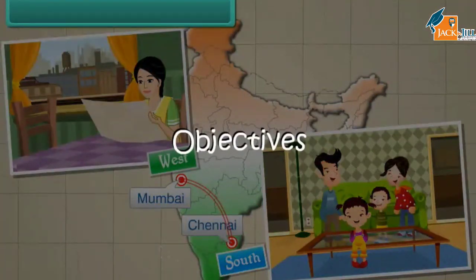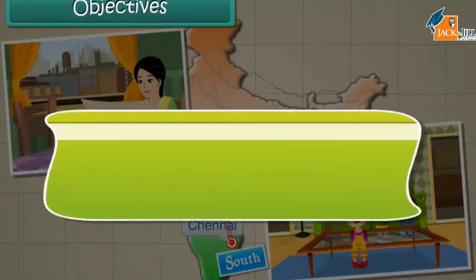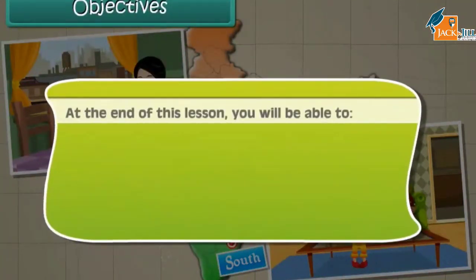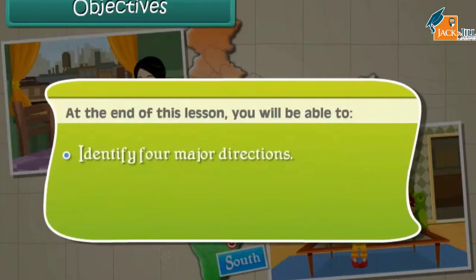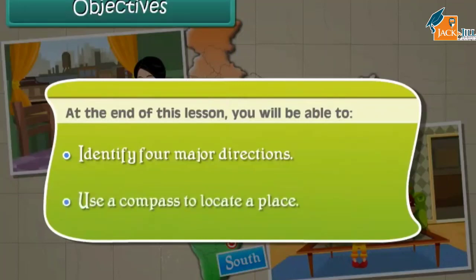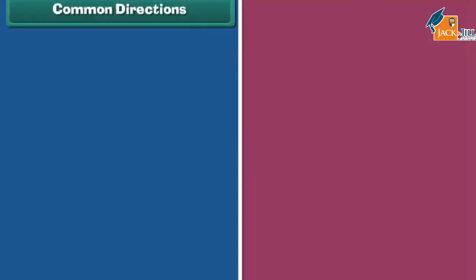At the end of this lesson you will be able to identify four major directions and use a compass to locate a place.